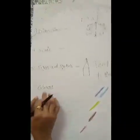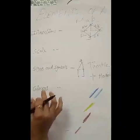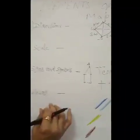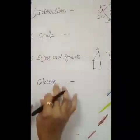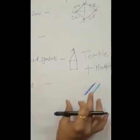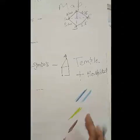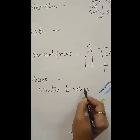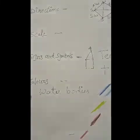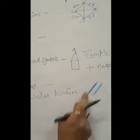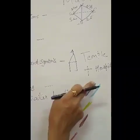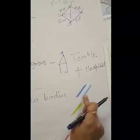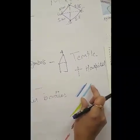The last element is colors. Colors help us understand the information on a map — different colors are used to show different information. For example, water bodies like rivers, oceans and streams are shown in blue. Dark blue shows deep water, and light blue shows shallow water bodies.